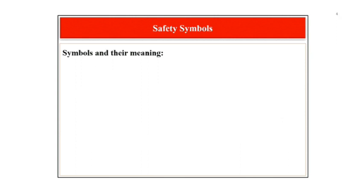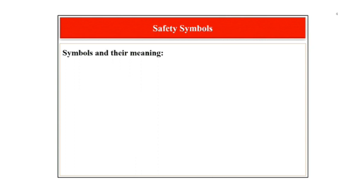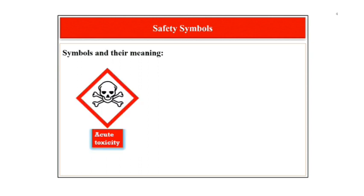The next symbol is the symbol for acute toxicity, which includes a skull and crossbones. The toxic material symbol indicates the presence of substances that may harm an individual if they enter the body. The possible routes of exposure to toxic materials are through inhalation, skin contact and ingestion. For example, gases like bromine, cyanide and carbon monoxide.